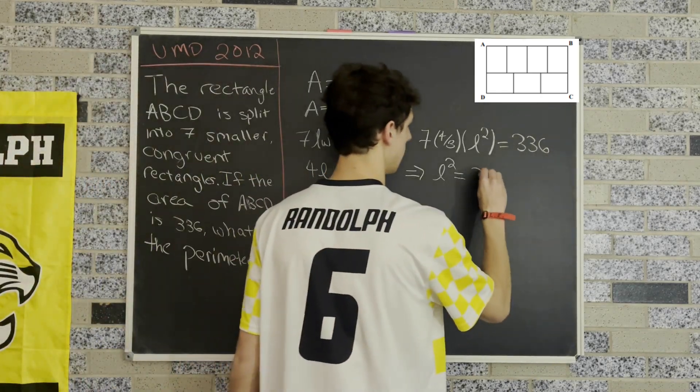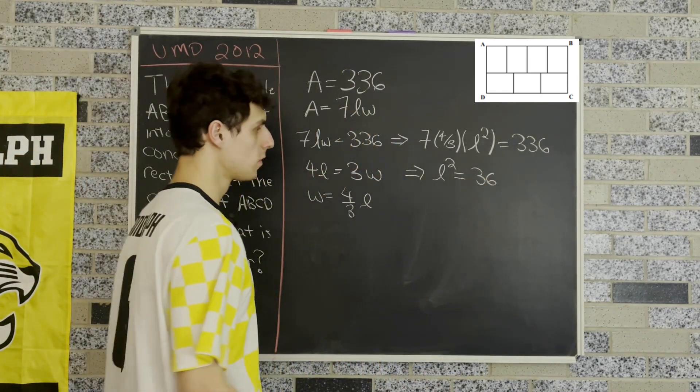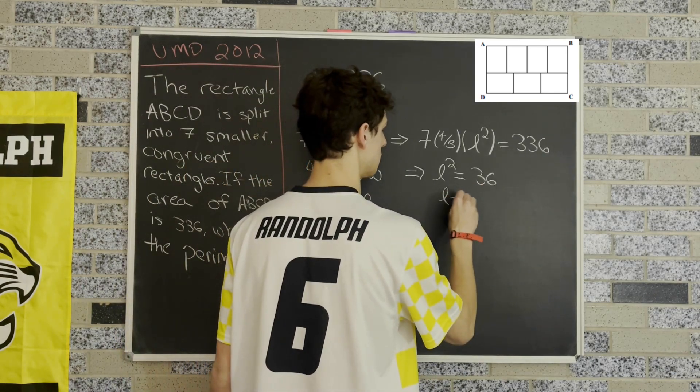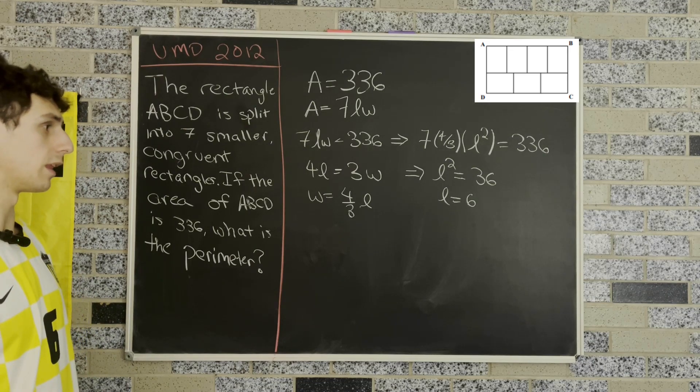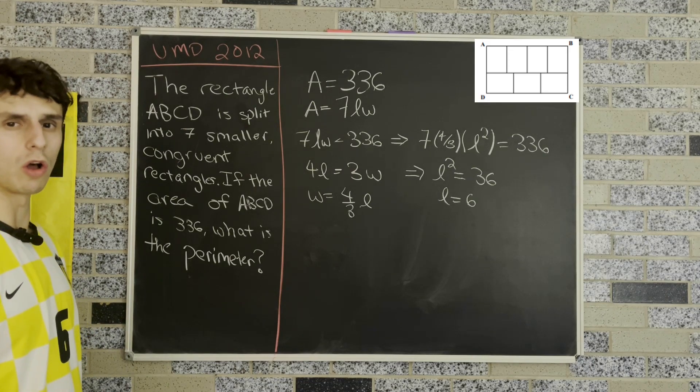Simplifying this down, we get L squared equals 36. The square root of 36 is six. We're only going to take the positive square root here because we're dealing with length and area, which are all positive terms.